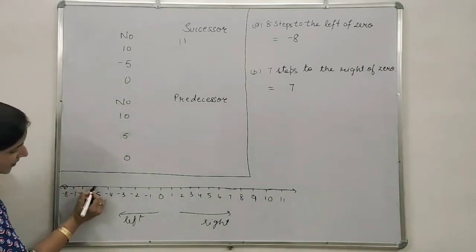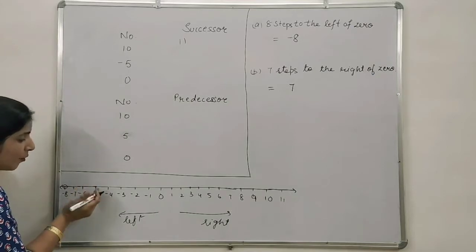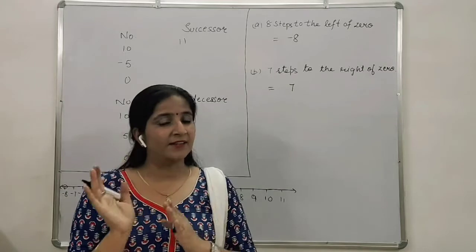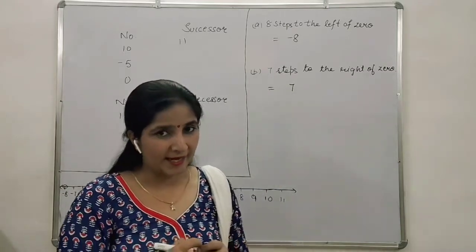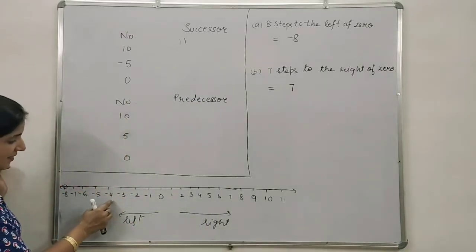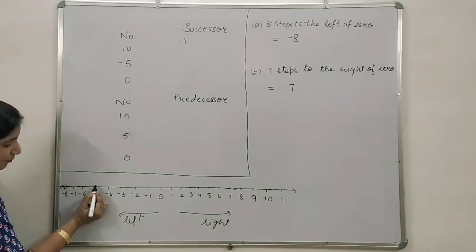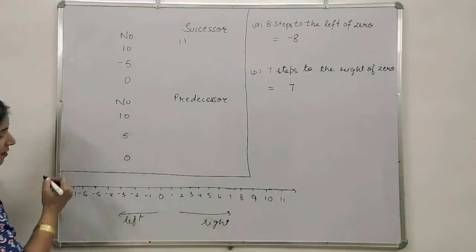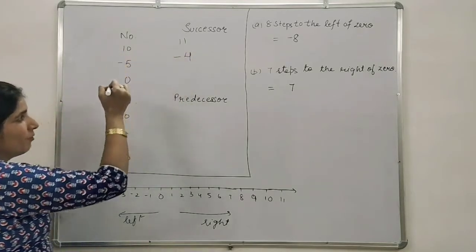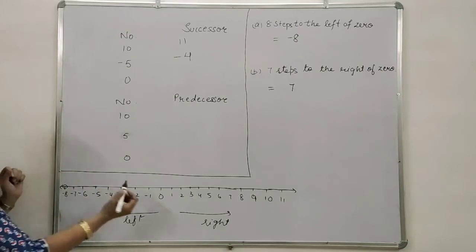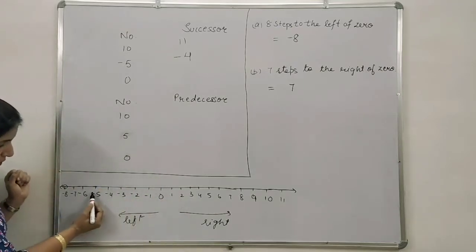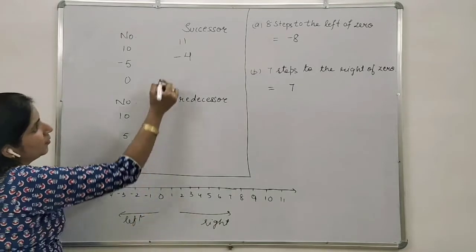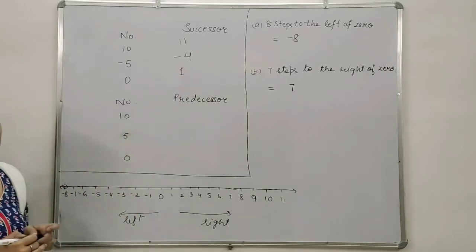What will be the successor of minus 5? You can see minus 5 is here. How can we make it a little more positive? It will still be negative, but 1 less negative — one number less negative, moving towards the right. That is the successor. From minus 5, if we move towards minus 4, then minus 4 is its successor. What will be the successor of 0? We have to move one step ahead towards the right side, so the successor of 0 will be 1.